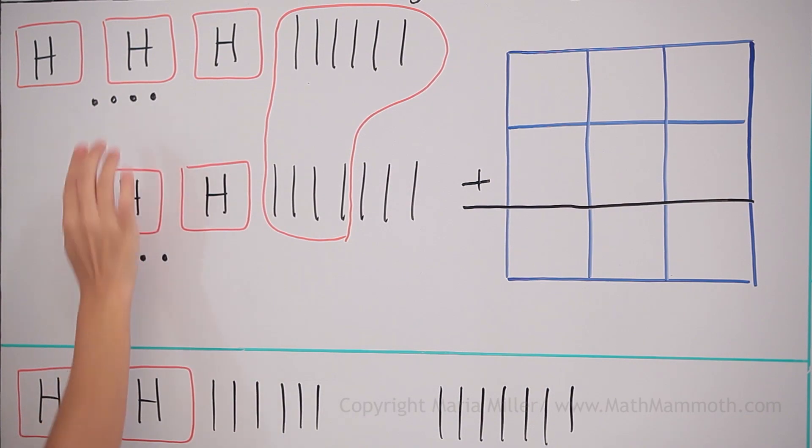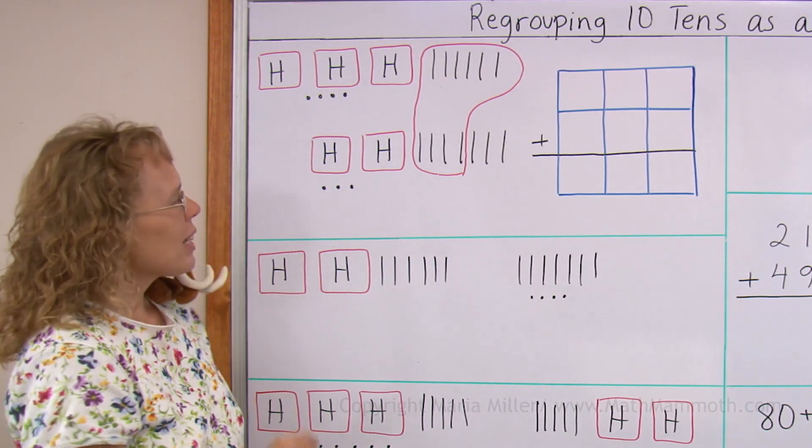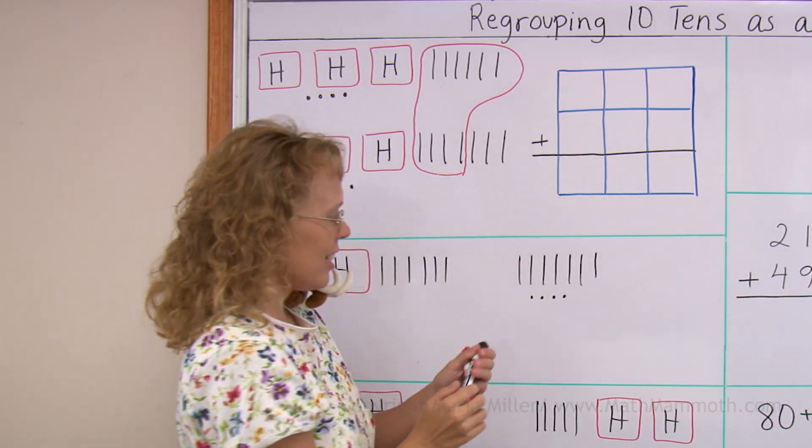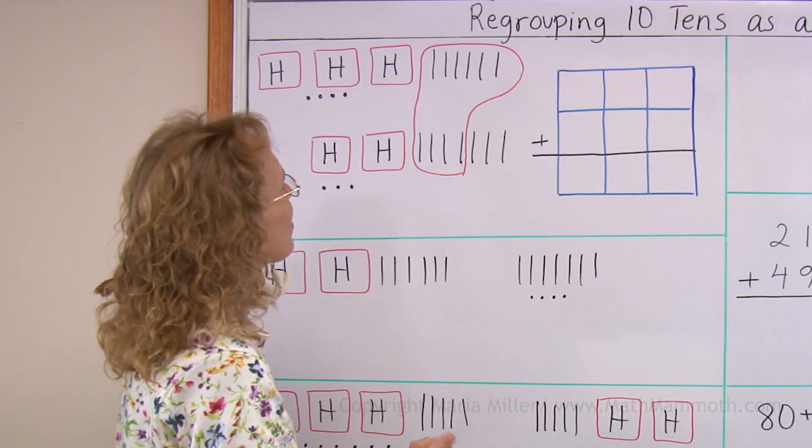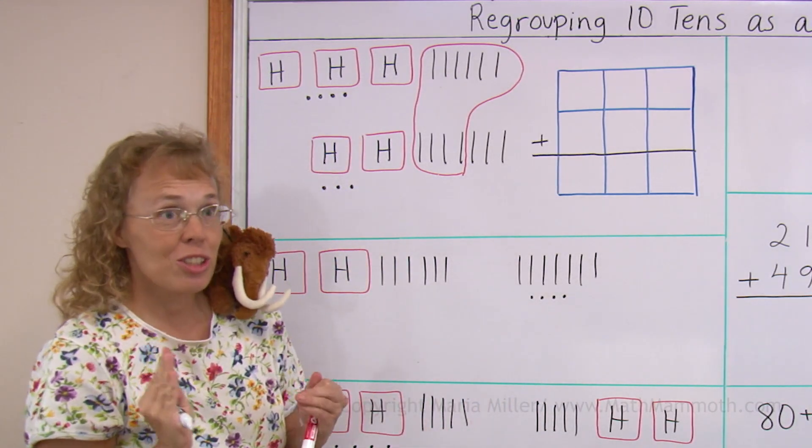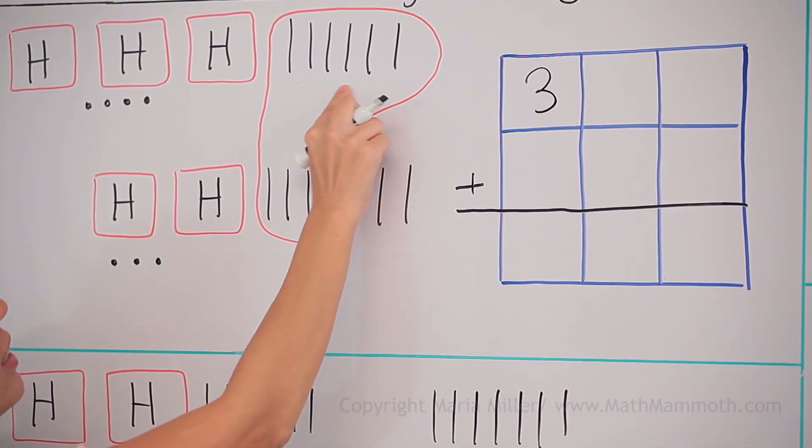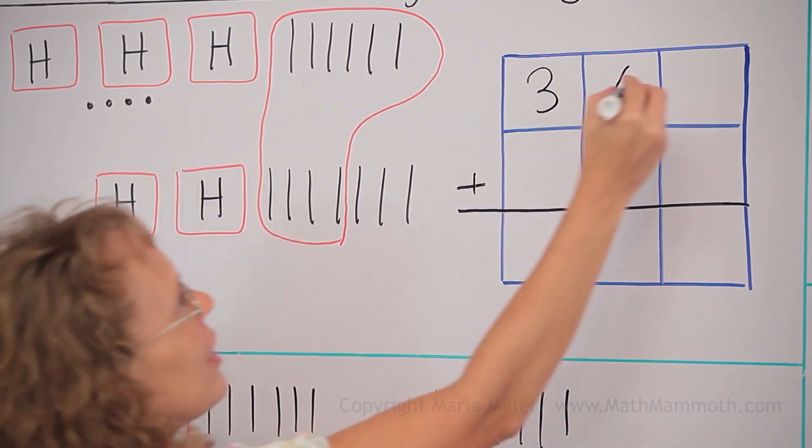And then three tens and then seven ones. But let's also write these numbers under each other here in the grid and see how the adding happens. Back to the original problem. Three hundred, and then I had six tens, and four ones. Three hundred sixty-four.